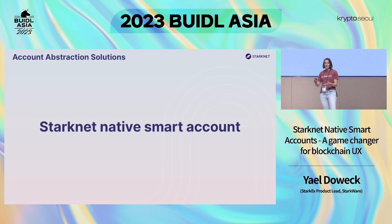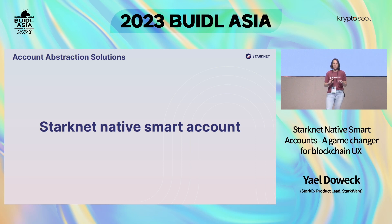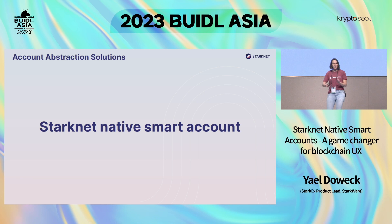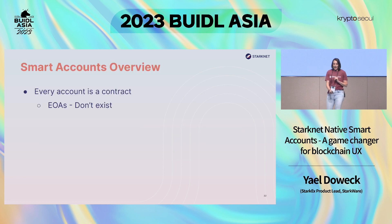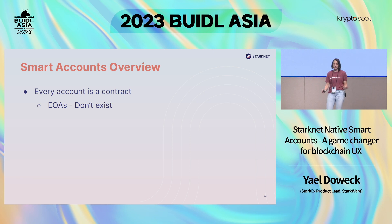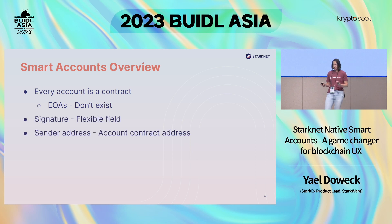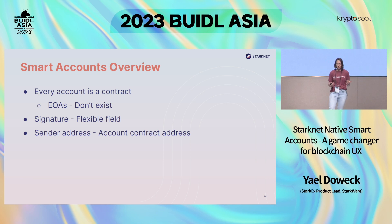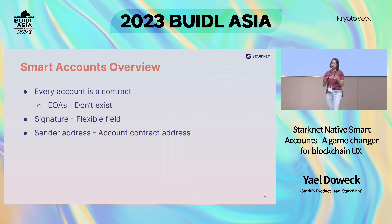Now I'll show you what we did on StarkNet. We implemented account abstraction baked into the protocol as one of our architecture decisions, called native smart accounts because it is native to the protocol. In StarkNet, every account is a contract — that's the only type of account we have; we don't have EOAs at all. The signature field in a transaction is a flexible field that can contain any type of signature. The sender address is the account contract address and does not correspond to your public key in any way.